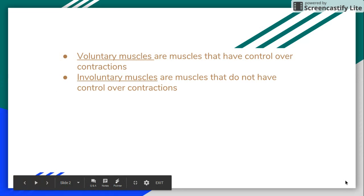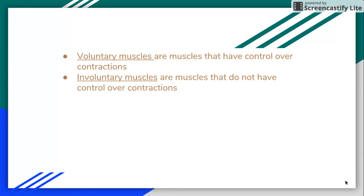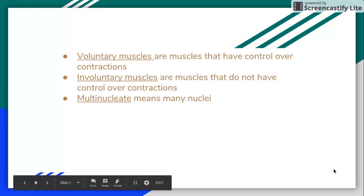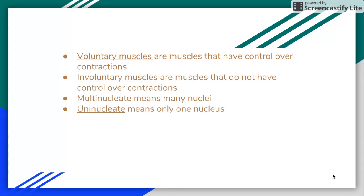Involuntary muscles are muscles that do not have control over contractions. Multi-nucleate means many nuclei; uninucleate means only one nucleus.